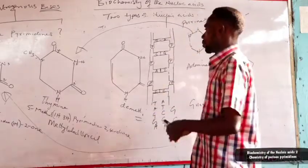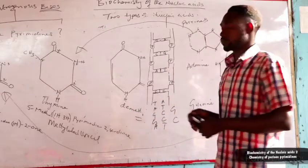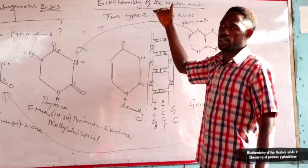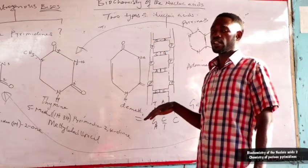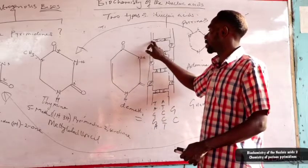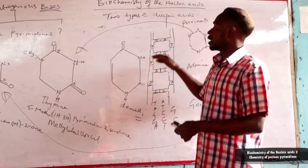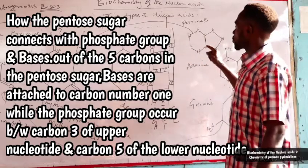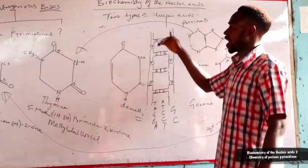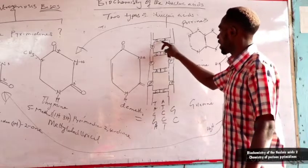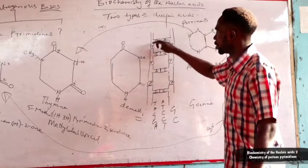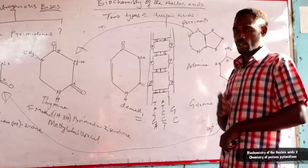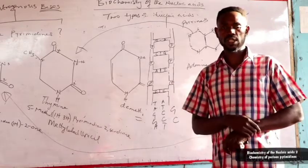Next time I will teach you further on the biochemistry of nucleic acids — specifically how the phosphodiester bonds are formed. The phosphodiester bond is formed between the number three carbon in one nucleotide and the number five carbon in the next nucleotide. The phosphate group exists between carbon three and carbon five. Also, carbon number one in the pentose sugar links with the nitrogenous bases in the interior via a glucosidic bond.